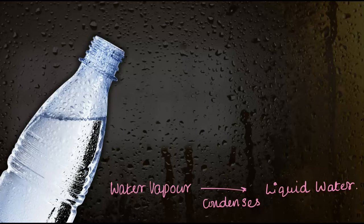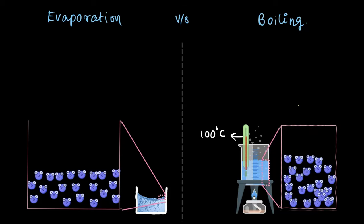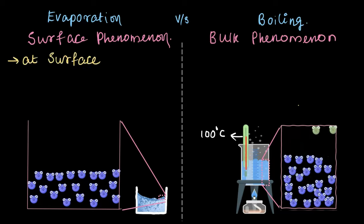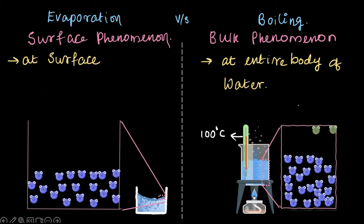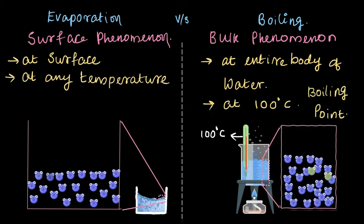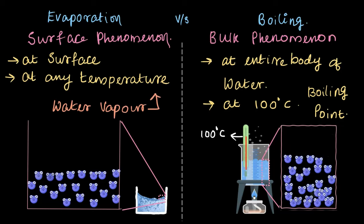Let's quickly summarize the differences. Evaporation is a surface phenomenon, whereas boiling is a bulk phenomenon — evaporation happens at the surface while boiling happens throughout the entire body of water. Evaporation can happen at any temperature, whereas boiling happens at 100°C, known as the boiling point. Water vapor is the technical term for the gaseous form of water at any temperature, while steam is the technical term for the gaseous form of water specifically at 100°C.